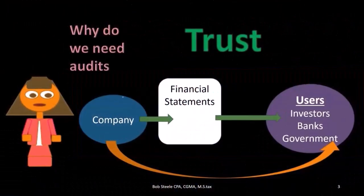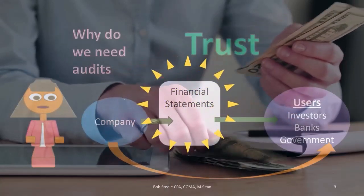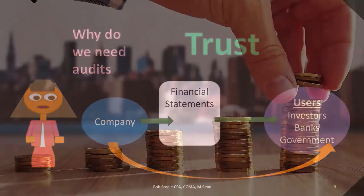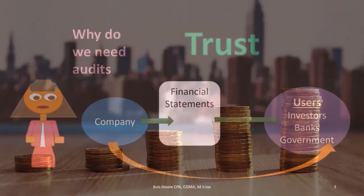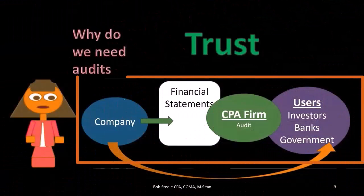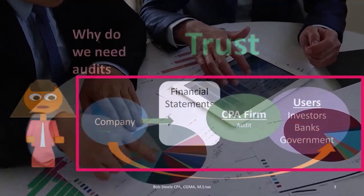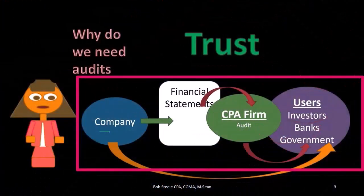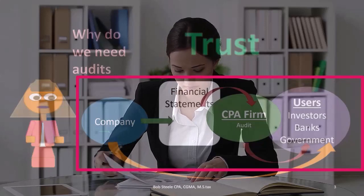But we still might have a problem, because the users might be saying the company has an incentive to maybe not provide financial statements that are correct, or they might provide financial statements that are not correct in terms of procedures or how it was created. Was it made in accordance to some standards? There could be errors on it. So the end users still may not fully trust the financial statements. That's where the CPA firm comes in with the audit, which should give some level of assurance that the financial statements — the responsibility of the company — are correct in accordance with some agreed-upon standards.